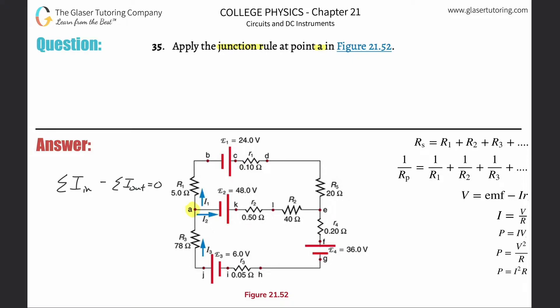It's fairly straightforward. It's basically the same thing as the loop rule with voltage, except this time we're talking about current. In other words, the total amount of current in must equal the sum of the current out of the junction.